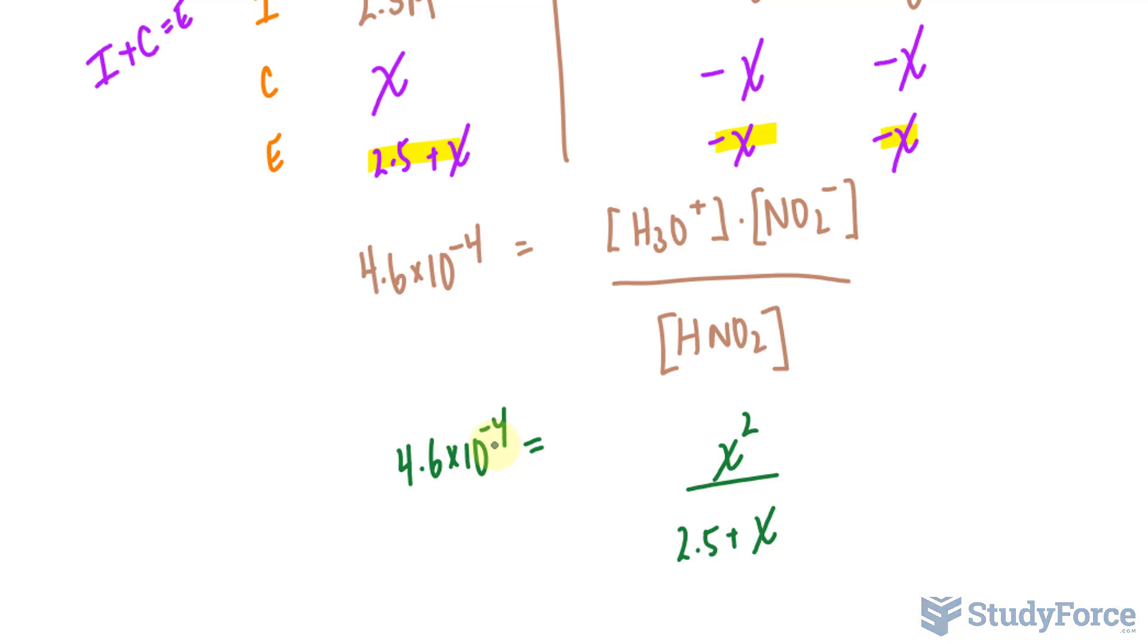to solve for X, because once we do, we can substitute it back into this expression that's highlighted and find out the equilibrium concentration for H3O plus. Then, from there, we can find the percent ionization.